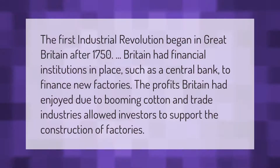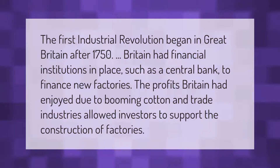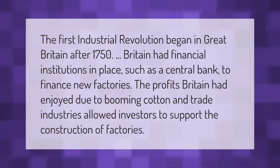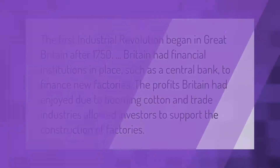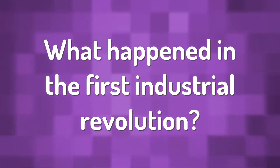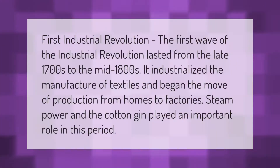The first Industrial Revolution began in Great Britain after 1750. Britain had financial institutions in place, such as a central bank, to finance new factories. The profits Britain had enjoyed due to booming cotton and trade industries allowed investors to support the construction of factories.